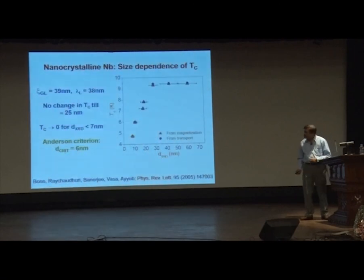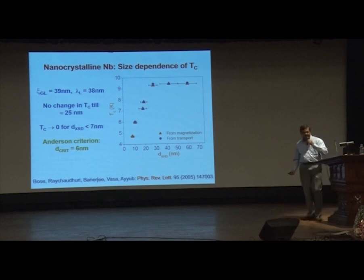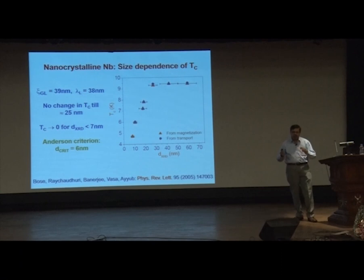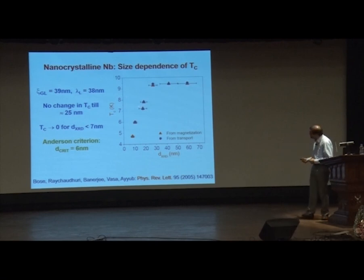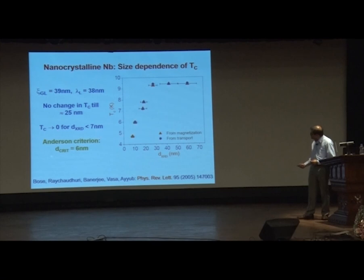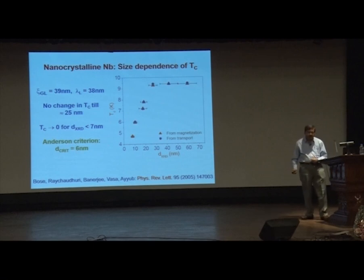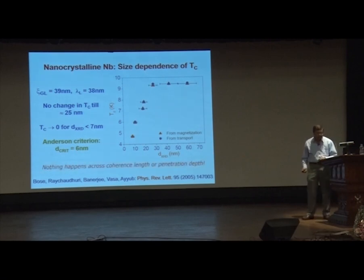In 2005 we looked at the variation of TC as a function of particle size in loosely compacted arrays of nanoparticles, which behave like a weakly coupled Josephson junction array. The TC measured is extremely robust — the value is exactly the same whether measured from magnetization or transport, and the two points exactly overlap. The Anderson limit for this material is 6 nanometers, and it is exactly at 6 nanometers where the TC goes to zero and it becomes non-superconducting.